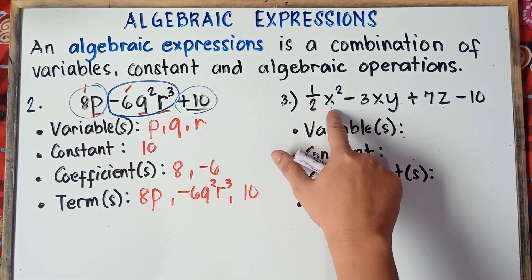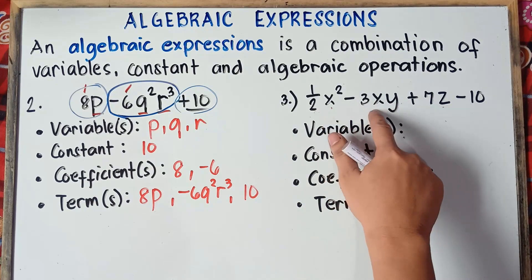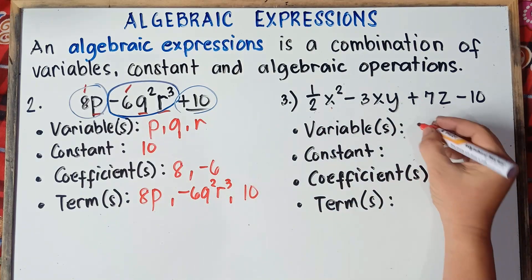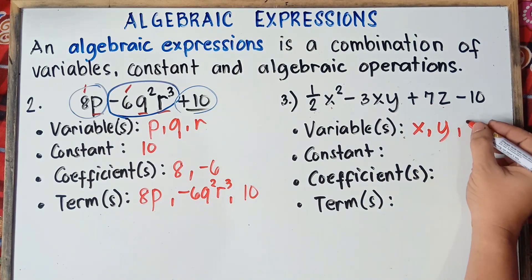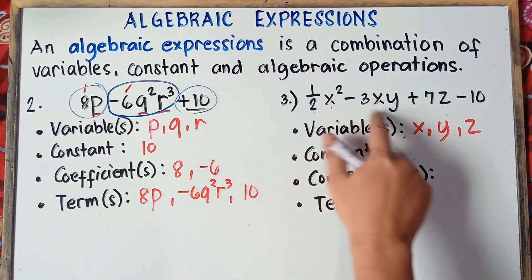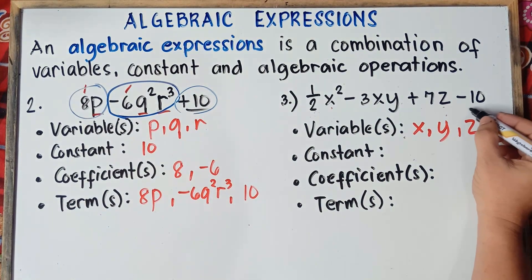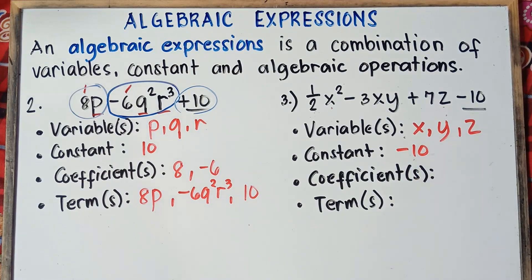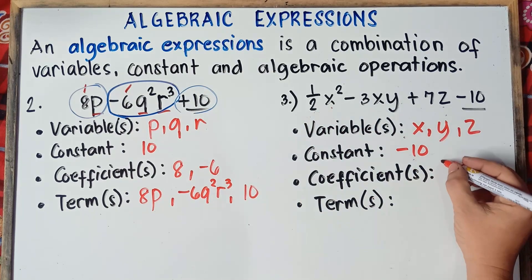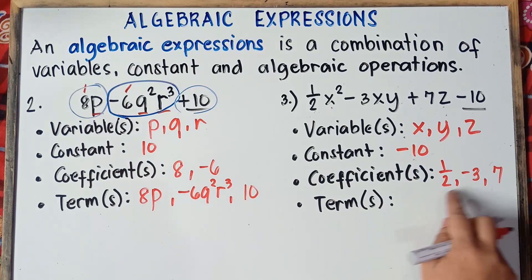Let's have example number 3. We have given one-half x squared minus 3xy plus 7z minus 10. Variables are the letters: x, y, and z. If you have the same variable appearing twice, count it as one. Constant is the number alone — negative 10. Include the minus sign. Coefficients are one-half, negative 3, and positive 7.